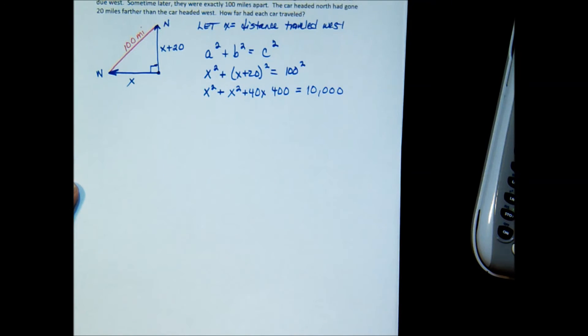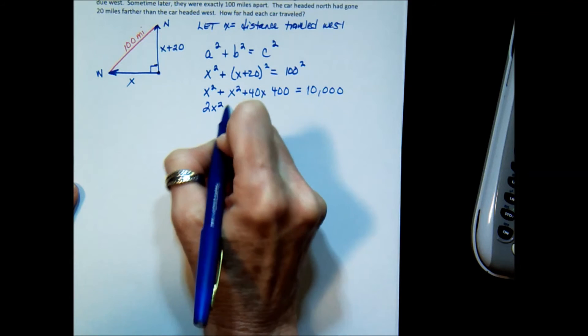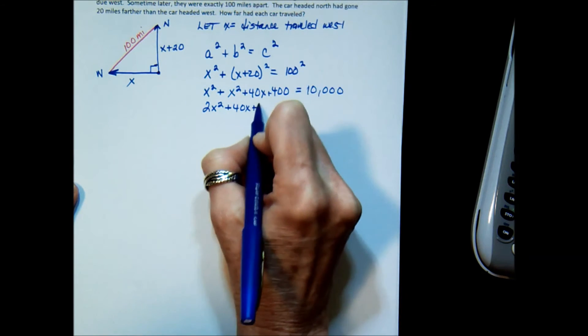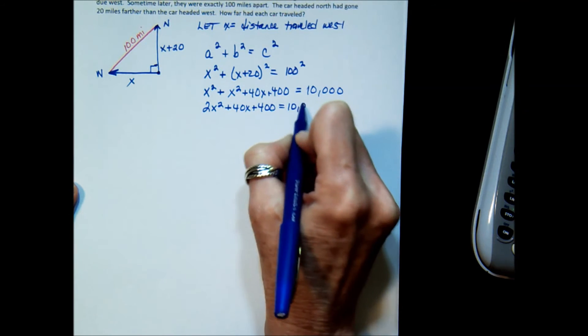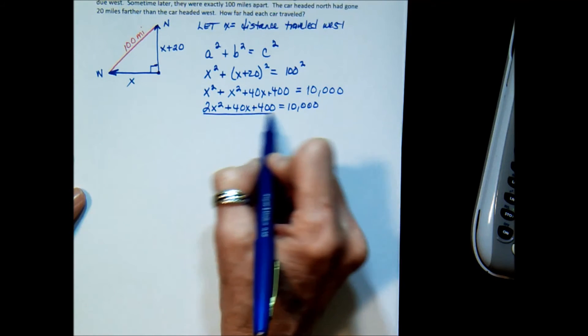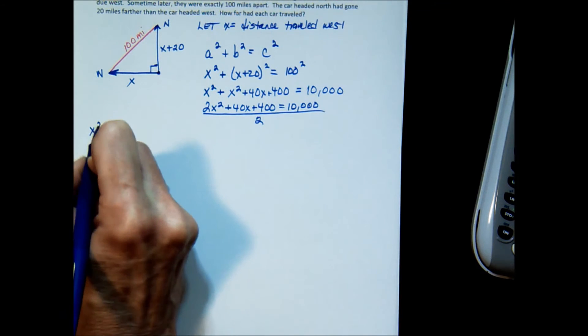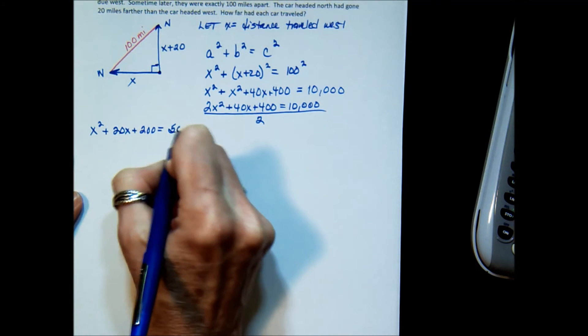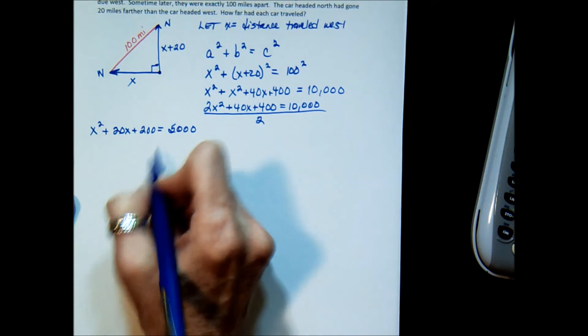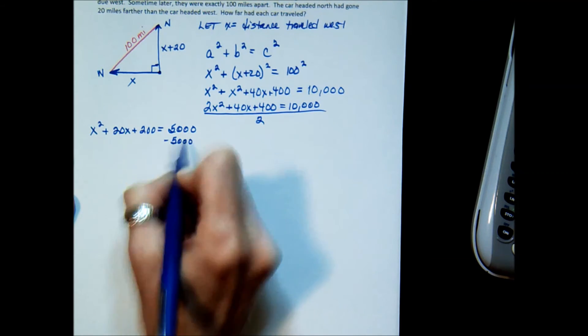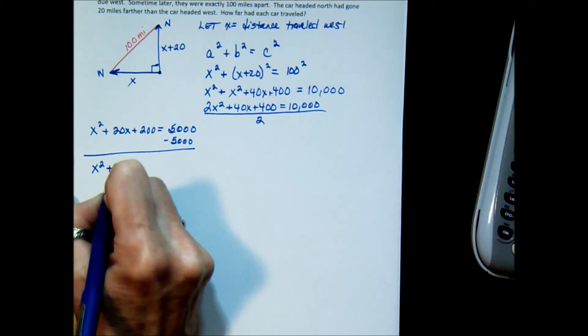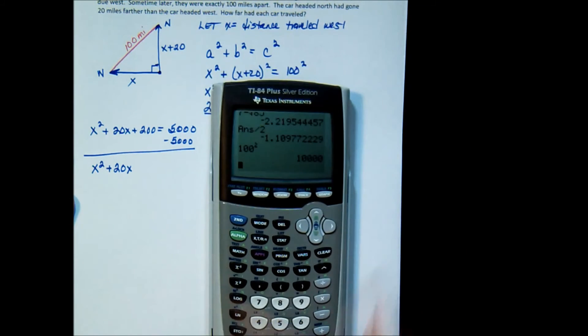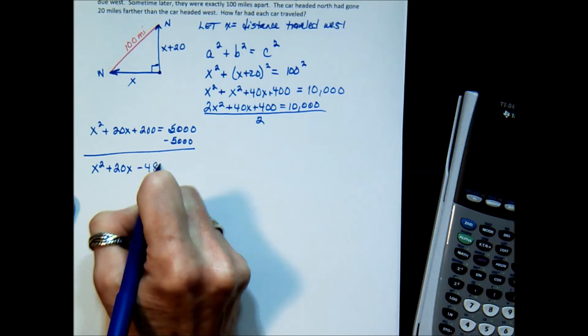Now let's do some simplifying. This would be 2x squared plus 40x. I forgot to put the plus here. Plus 400 equals 10,000. To make the numbers smaller, I'm going to go through and divide everything by 2. I can do that. So that gives me x squared plus 20x plus 200 equals 5,000. And now I'm going to get it equal to 0 by subtracting a 5,000. So we have x squared plus 20x. You've got, if you need to do it on a calculator, you can do it in your head. 200 minus 5,000 gives us negative 4,800. So negative 4,800 equals 0.